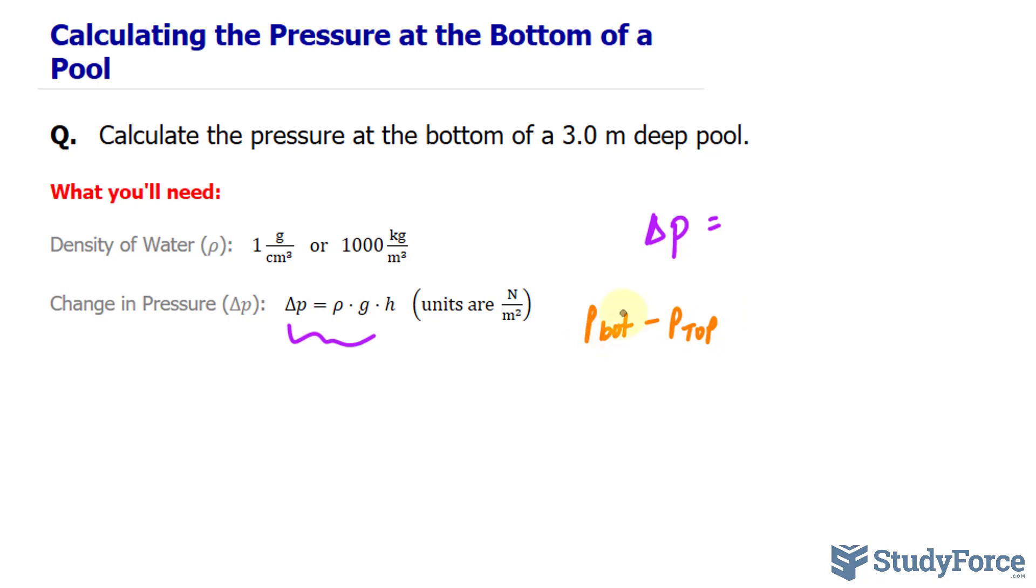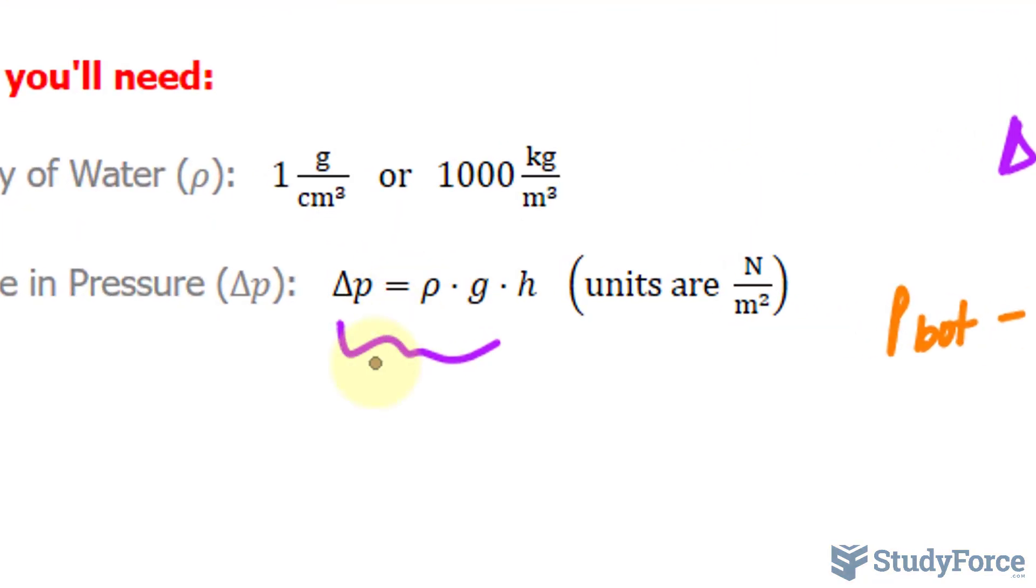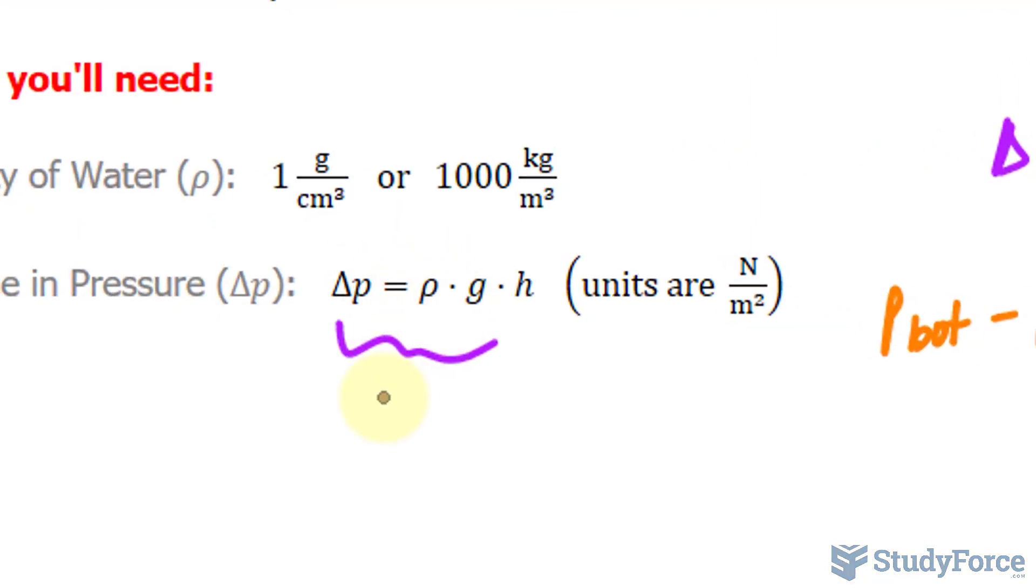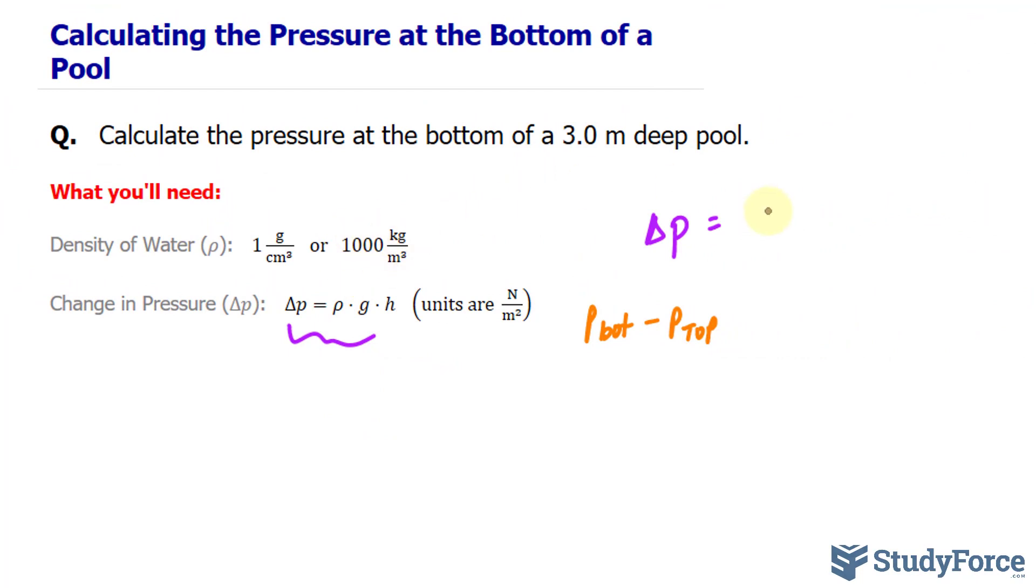So at the bottom of the pool minus at the top of the pool. And that is equal to this Greek letter, which represents the density of water. That Greek letter is rho. So I'll use this value of 1,000 kilograms per meter cubed.